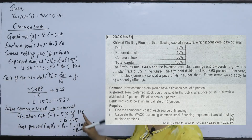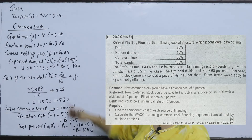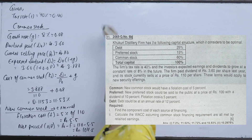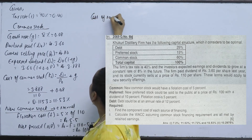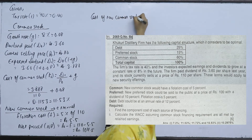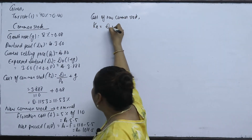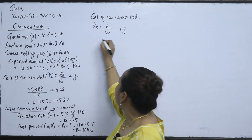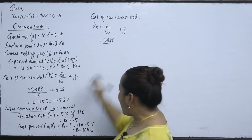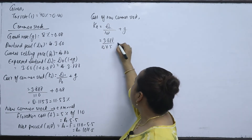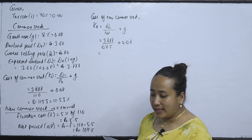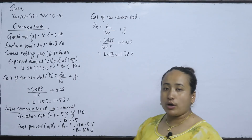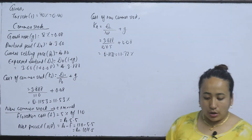The cost of new common stock (external equity) formula is Ke = D1 / NP + G. D1 is 3.888, NP is 104.5, and G is 0.08. So Ke = 0.1172, meaning 11.72%.